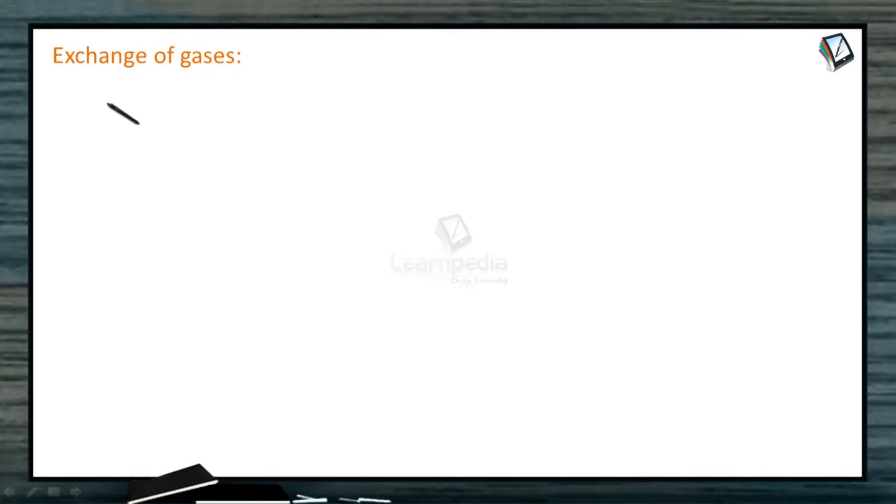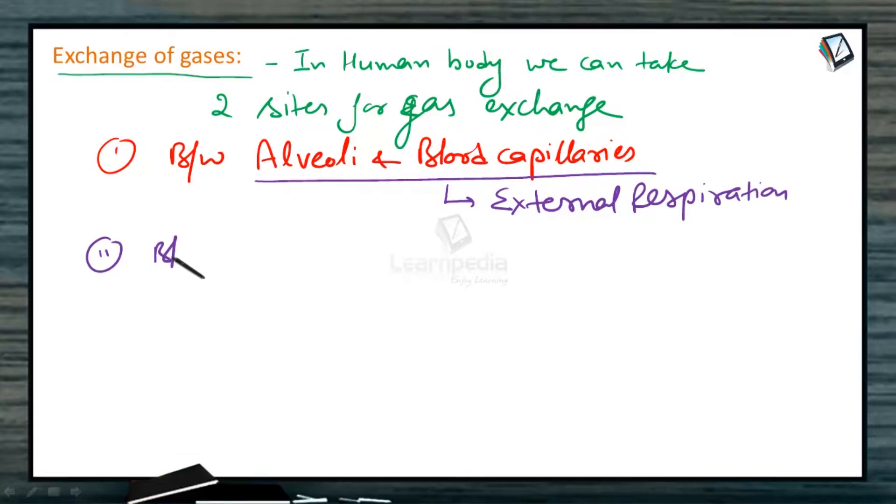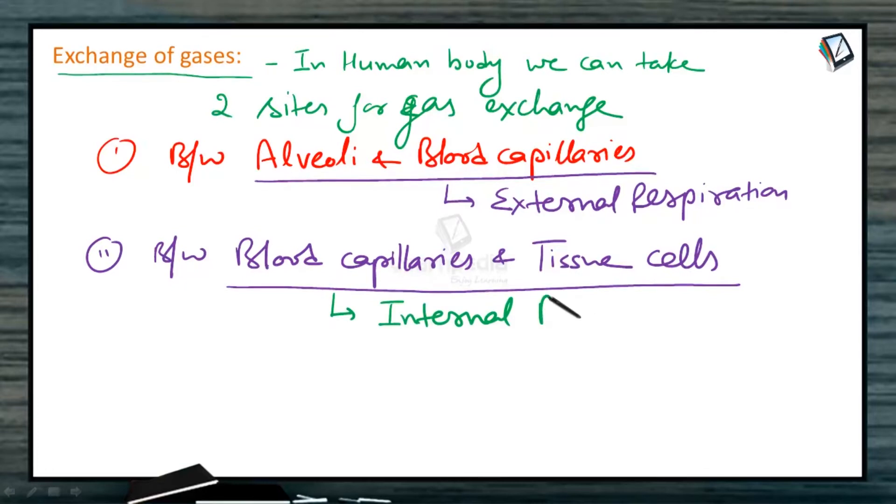Let us now discuss a new topic: exchange of gases. In the human body, we can take two sites for gas exchange. One between alveoli and blood capillaries. This exchange is referred to as external respiration. And the second exchange site is between blood capillaries and tissue cells. Such exchange is called internal respiration.